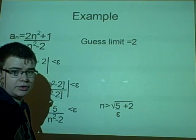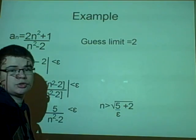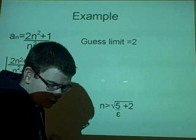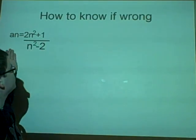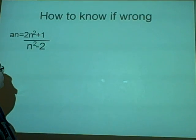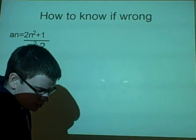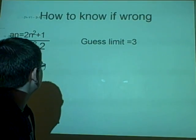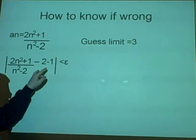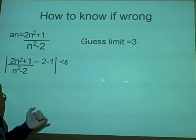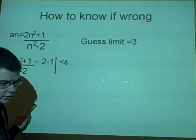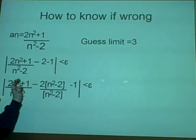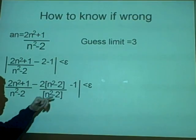One thing I found hard to understand is how do we know if something is not true. I asked for some help — thanks to Craig Dawson who was very helpful. Using the same sequence (2n² + 1)/(n² - 2), let's say we guessed the wrong limit: limit = 3. It's exactly the same procedure, but now we write minus 3 as minus 2 minus 1, which is the same as minus 3.